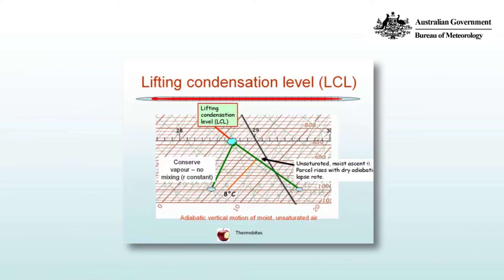When the line of constant mixing ratio crosses the dry adiabatic that corresponds to the parcel, we've reached the lifting condensation level. From then on, parcels will ascend under saturated motion and liquid water will condense. In this particular example, the lifting condensation level is at about 850, or 845 hPa.